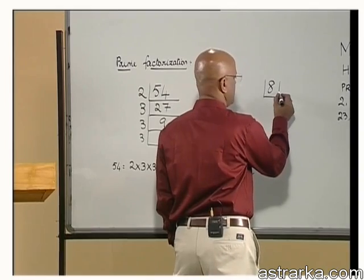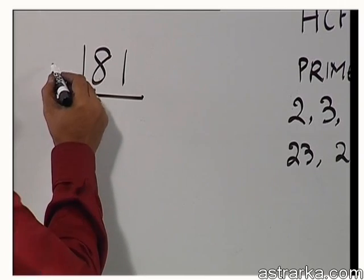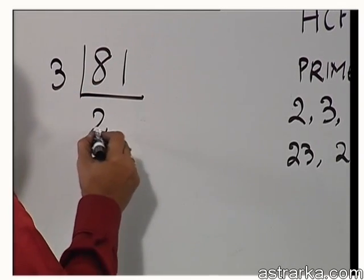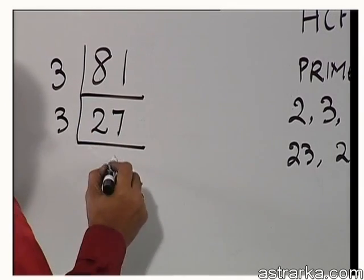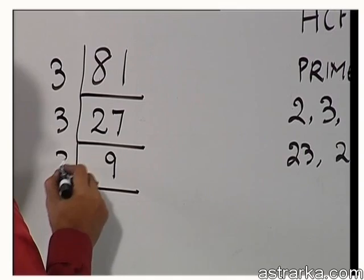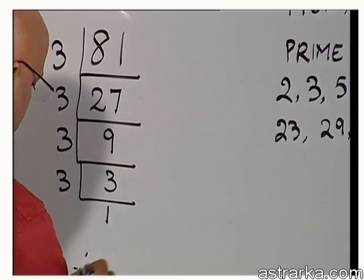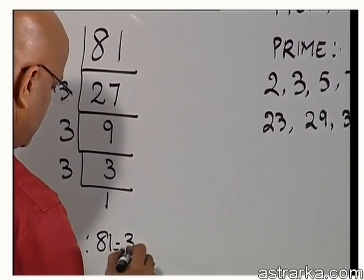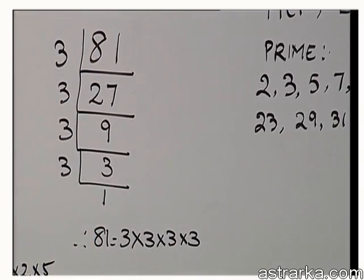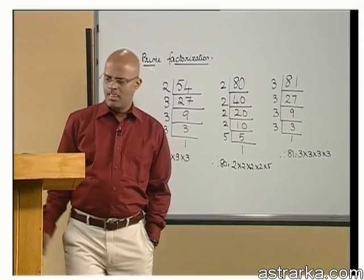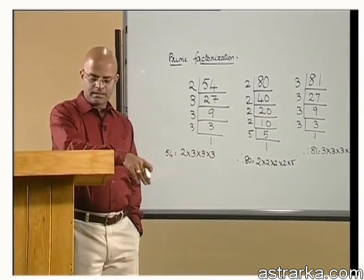For 81: 8 plus 1 is 9, 9 is divisible by 3, therefore 81 is divisible by 3. Dividing gives 27, 9, 3, 1 — each step dividing by 3. So 81 is 3 into 3 into 3 into 3. That's how you go through the process of prime factorization.